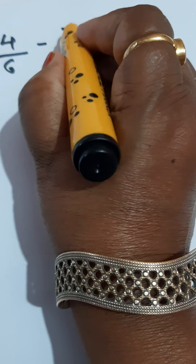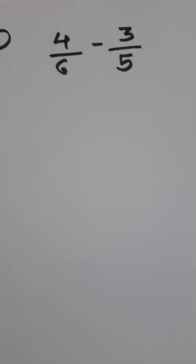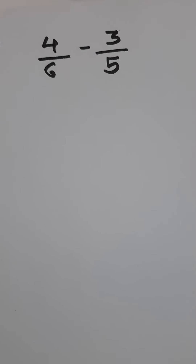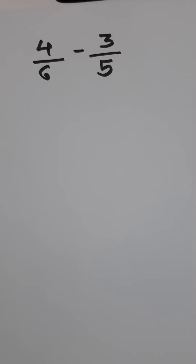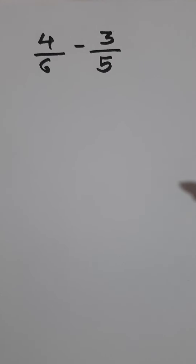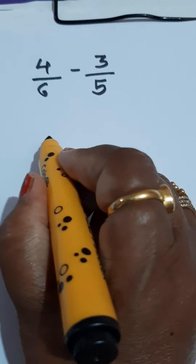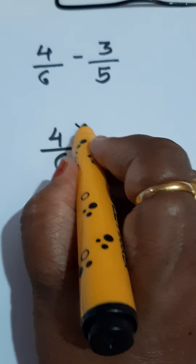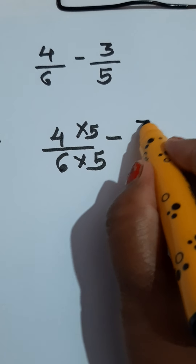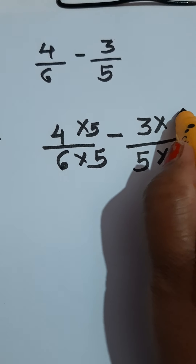Problem number 4: 4 by 6 minus 3 upon 5. Now observe the denominators — the denominators are not from the same table. So how can we make them like fractions? In the above examples the denominators were from the same table, so by multiplying by a number we got equal denominators. But here they are not from the same table. So here, multiply the first fraction by the second denominator.